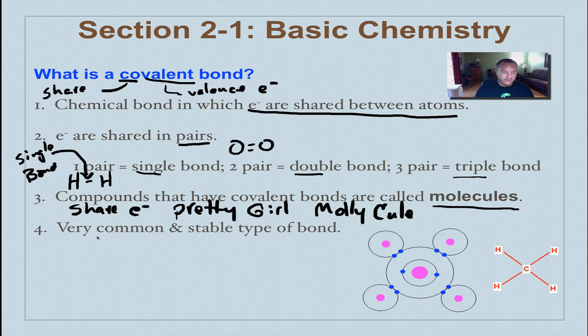Now, one thing you want to know about covalent bonds is they're very common in living things. Most of the bonds in your body are covalent bonds, and they're actually very, very stable. Over here in this graphic down here in the lower right, there's two different ways you can draw. Here we have a Bohr's model again, and as you can see, these electrons right here are being shared, and this is actually a molecule of methane, which is natural gas.